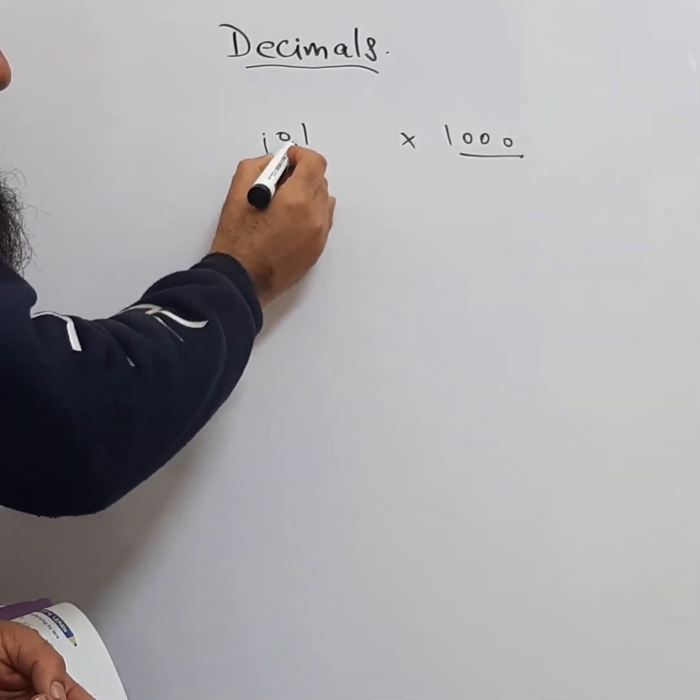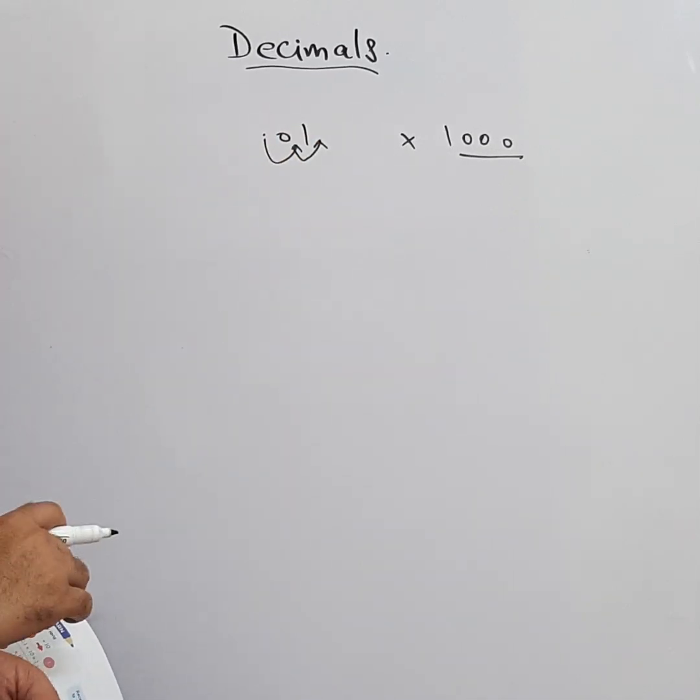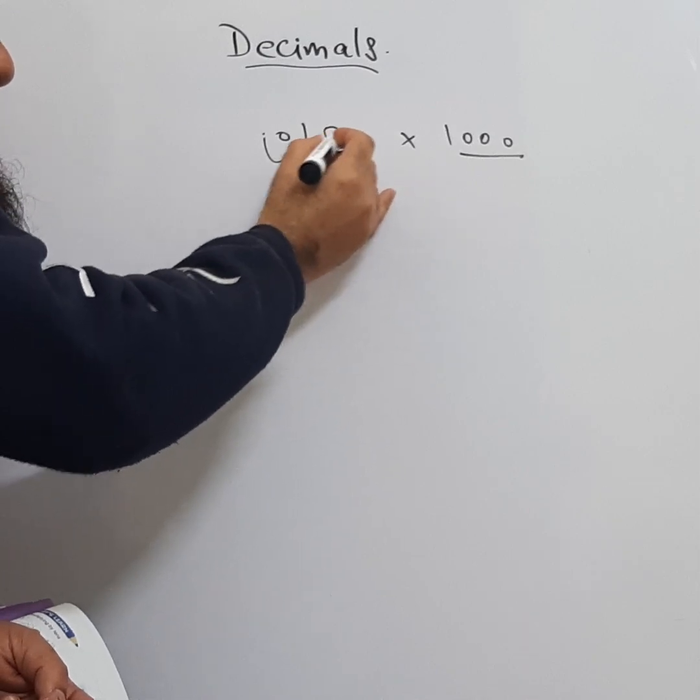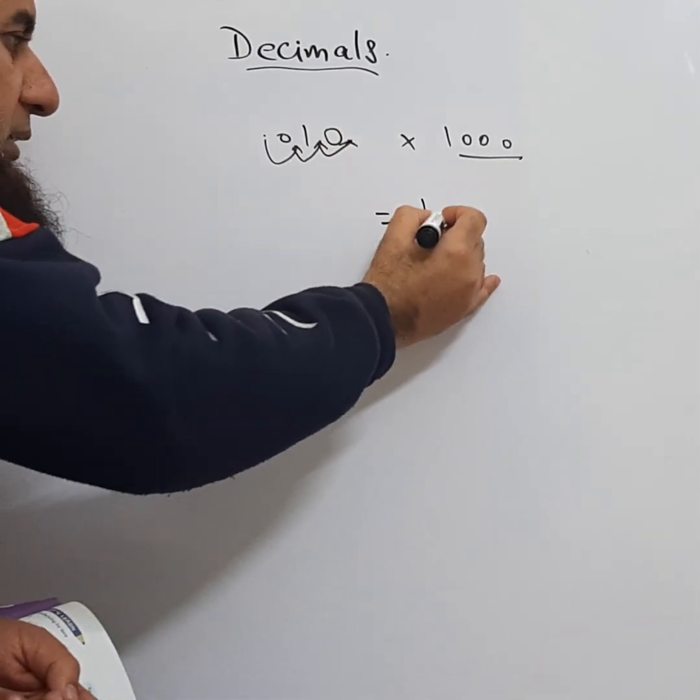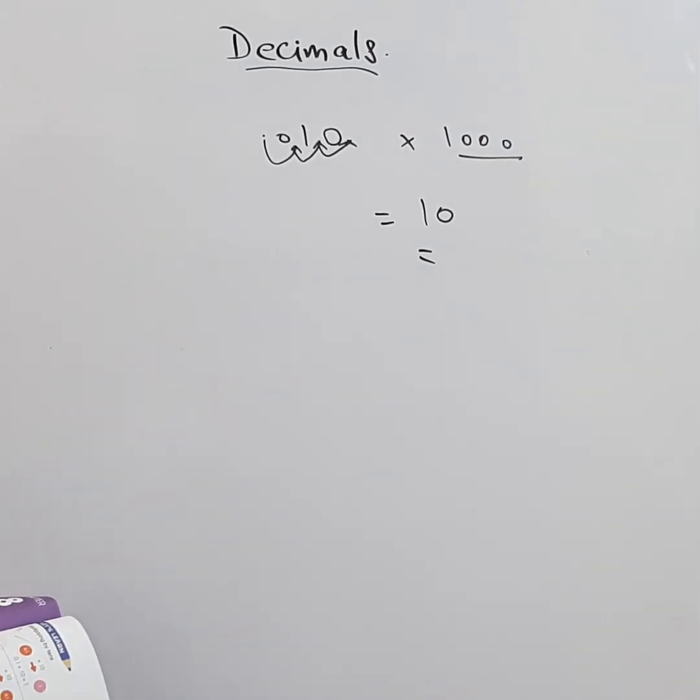This is one jump, this is second jump. It comes after one. Then we need to give the third jump, so we will put zero here and it comes here. This is the third jump. So the answer is 10. The rest we will do in the next video.